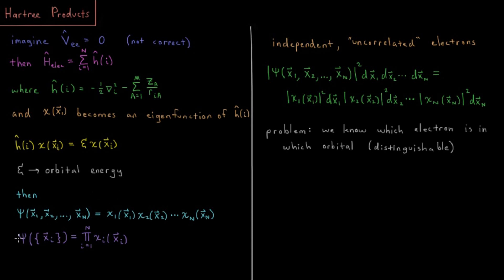Or if we wanted to be fancy and formal, we could write that our electronic wave function, which is a function of the set of all x, y, z, and spin functions of each electron, or spin coordinates of each electron, is a product from i equals 1 to n of the i-th spin orbital, which is a function of the i-th electron's coordinates.